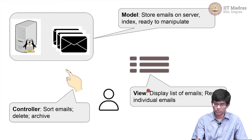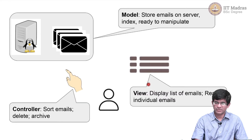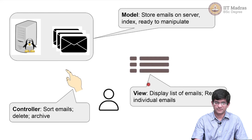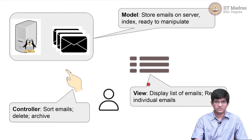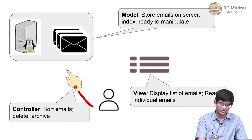The next part, the view, is where we would do things like displaying a list of emails, reading individual emails, or composing a new email — each of those would correspond to a different view. That is where the user interacts with the application. The third part is the controller, which takes messages between the user interface — the view — and the data — the model. So the controller is primarily responsible for taking information back and forth between the view and the model.